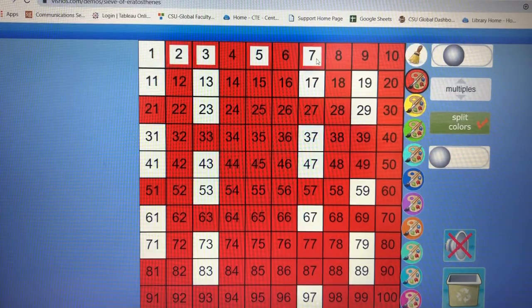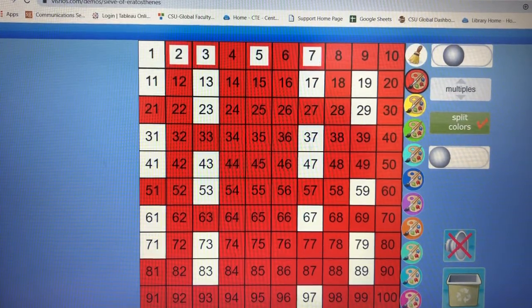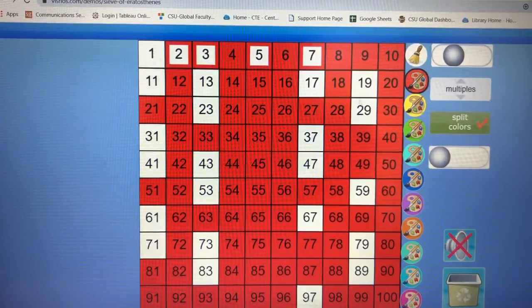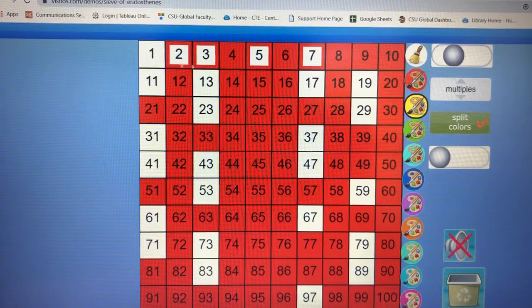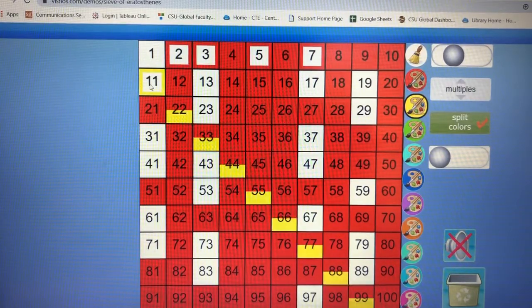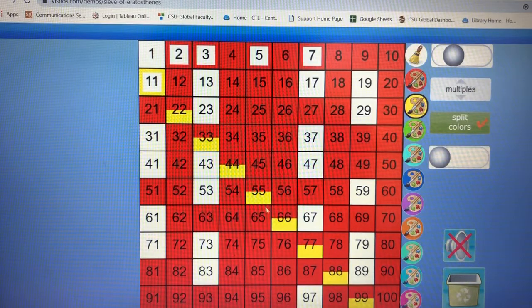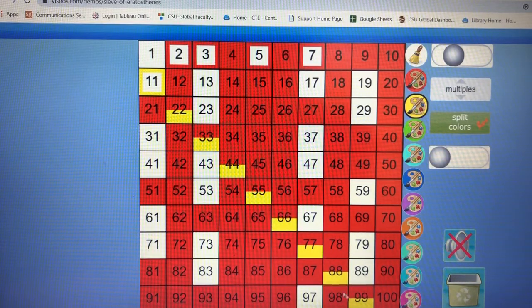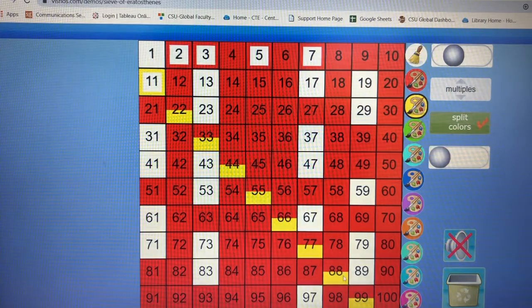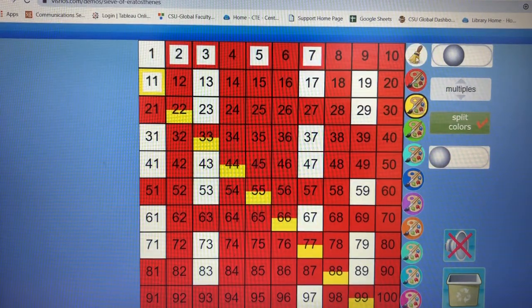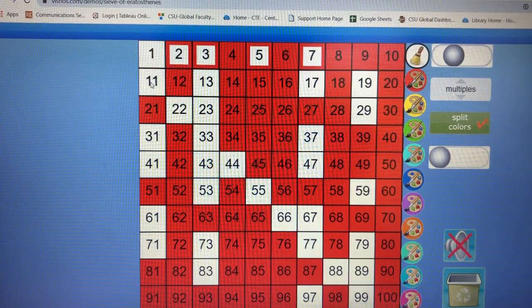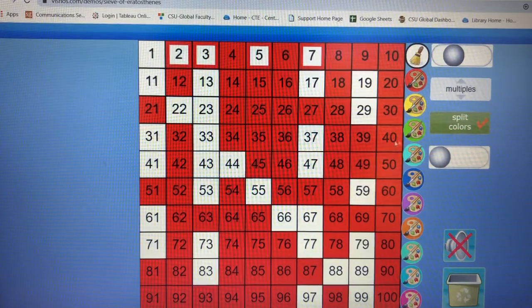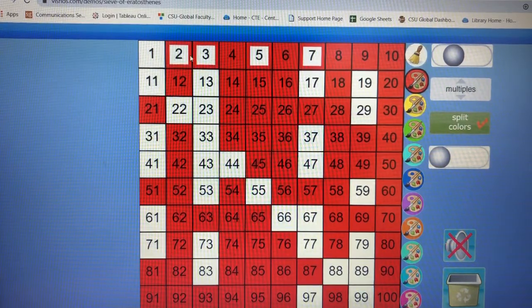Then the next one is 7, and all the multiples of 7 are redded out. You can do different colors, but it starts looking a little wild. If I do yellow, now all the multiples of 11. Also, if I click on this broom and then click 11, it erases those colors. I'm going to go back to the red and click 11.